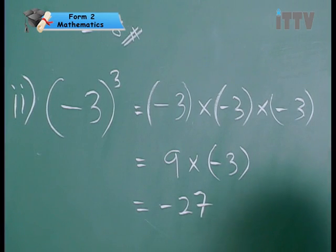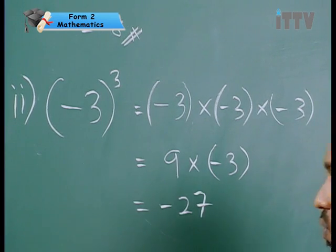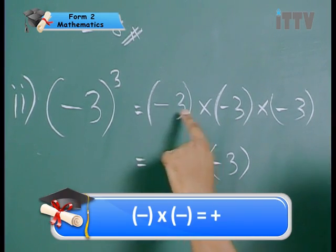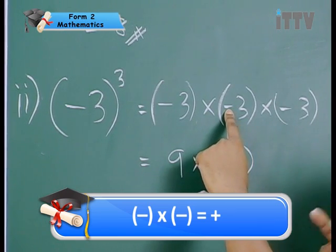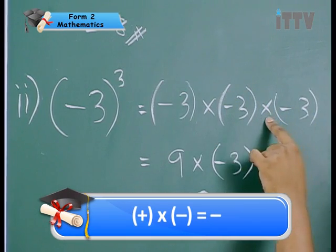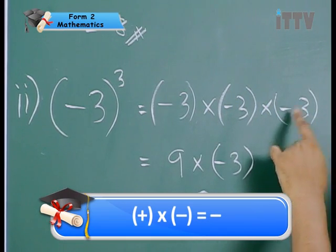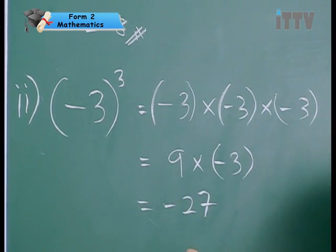Once you get the hang of this, what you can do is you can do it at one go. Watch. Negative multiplied by negative. Think positive. Positive multiplied by negative. Think negative. See negative? You can do it at one go if you want to.